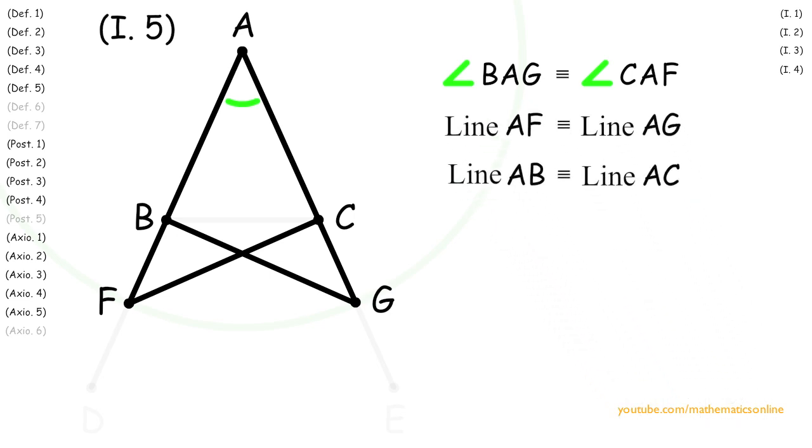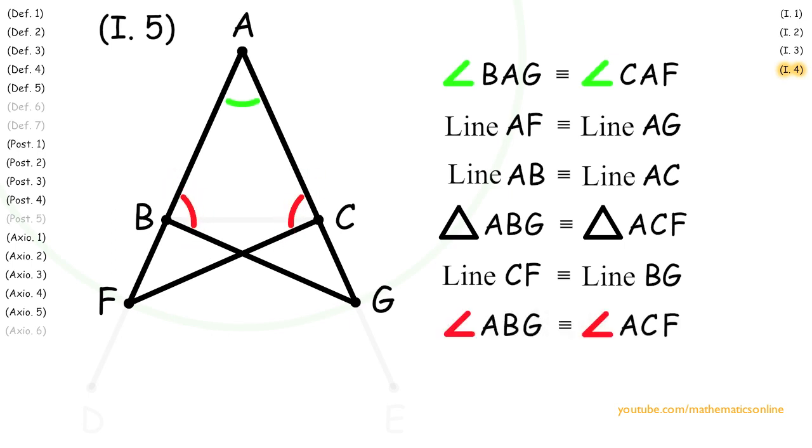Now, since both triangles share a corresponding side angle and side, then by Proposition 4, triangle ABG is congruent to triangle ACF, line CF is congruent to line BG, angle ABG is congruent to angle ACF, and angle AFC is congruent to angle AGB.